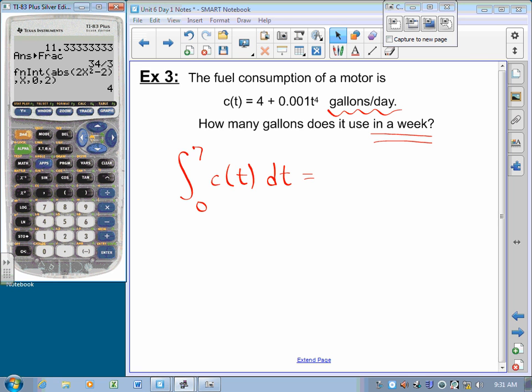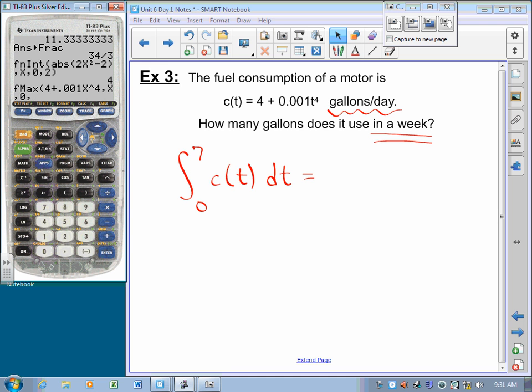How do I do that? I ask my calculator. I'm going to integrate 4 plus 0.001 x to the 4th dx from 0 to 7. And it's going to give me, did I get that right? I did!